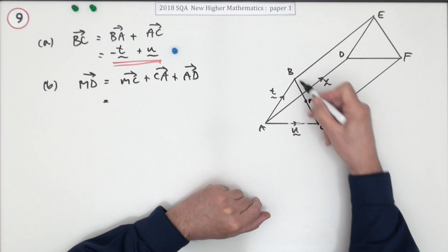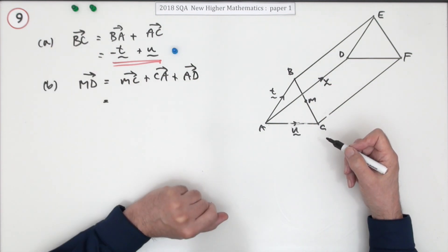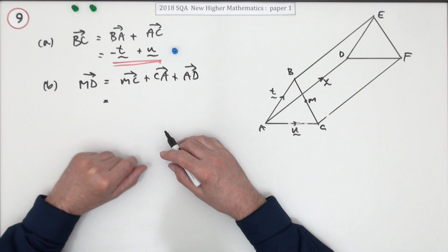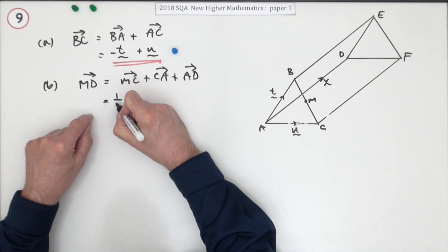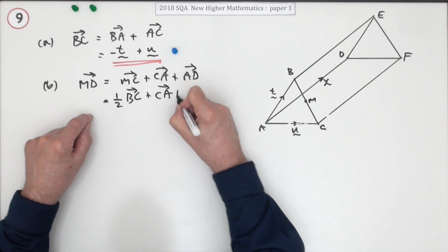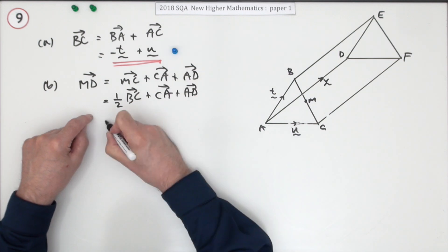Now M to C is half of the answer in the first part. So I don't know if you'd have to state that explicitly. That just means I'm going to write it all again. Oh, okay, I'll just write it all again. So it's a half of BC plus CA plus AD. I don't know if I need to do that.